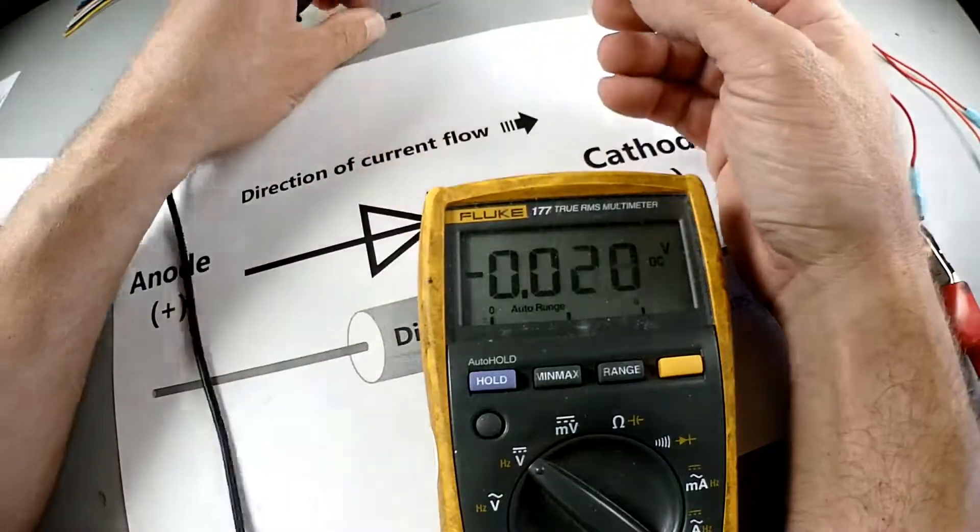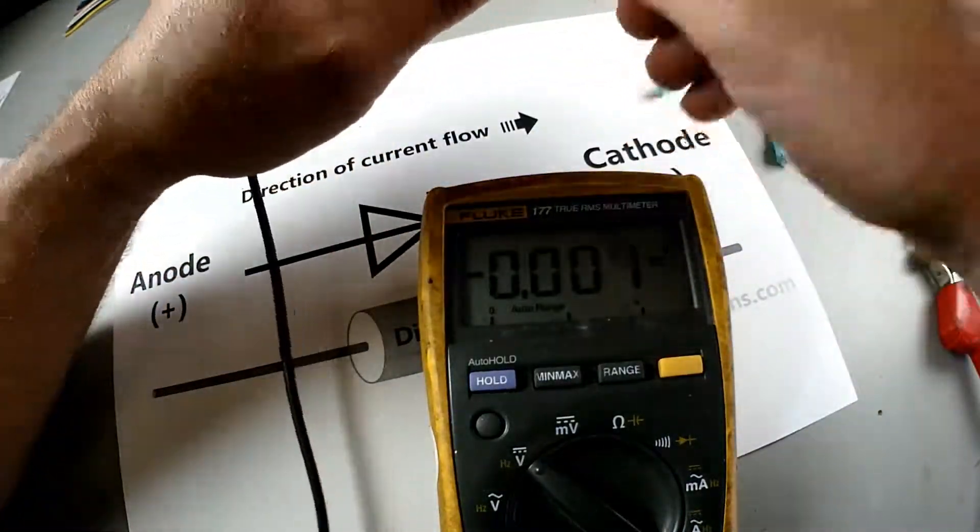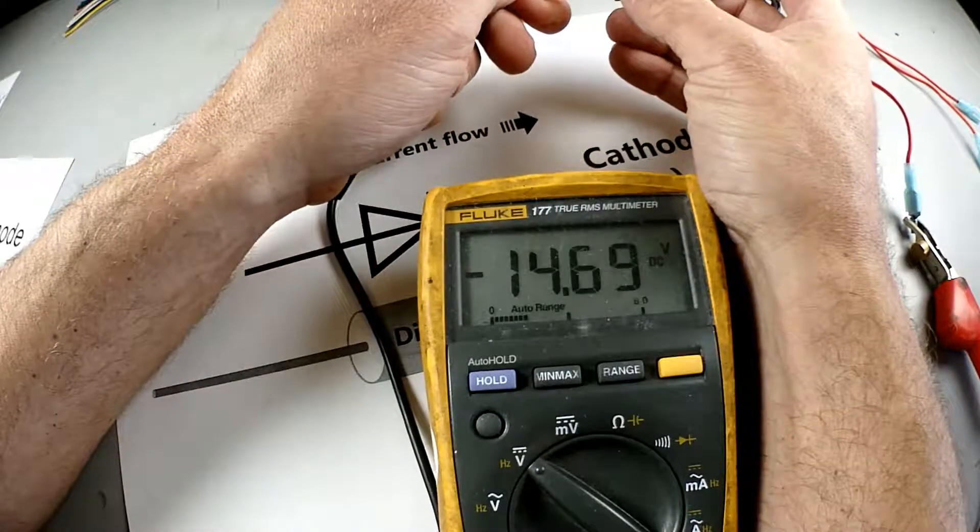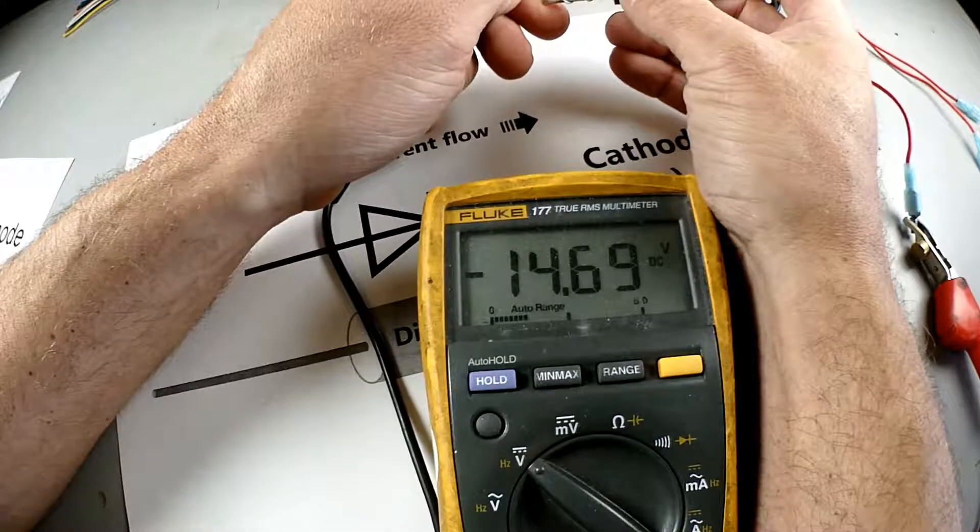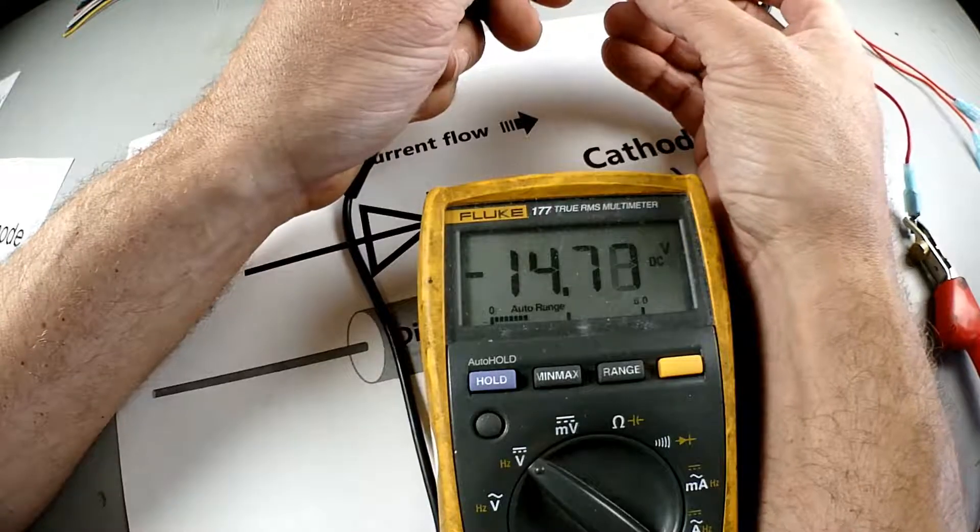So if you series a bunch of diodes together you can keep on dropping. It would take a lot of diodes to get to like 5 volts if that's what you were trying to do. It'd be much simpler to buy a circuit designed to do that like a PAC Audio piece.